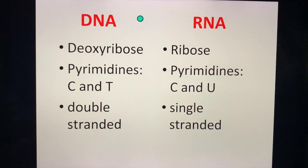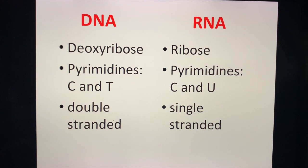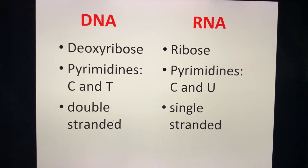The basic backbone sugar for DNA is deoxyribose, while in RNA it's ribose. The pyrimidine bases in DNA are C and T — cytosine and thymine — while in RNA the pyrimidine bases are C and U — cytosine and uracil. Strongly memorize that uracil is found only in RNA. DNA is double-stranded while RNA is single-stranded.